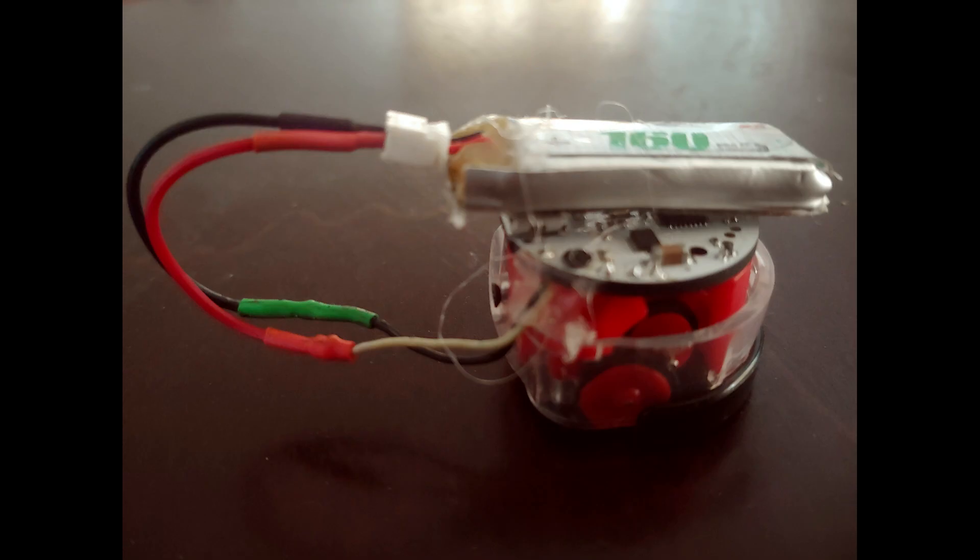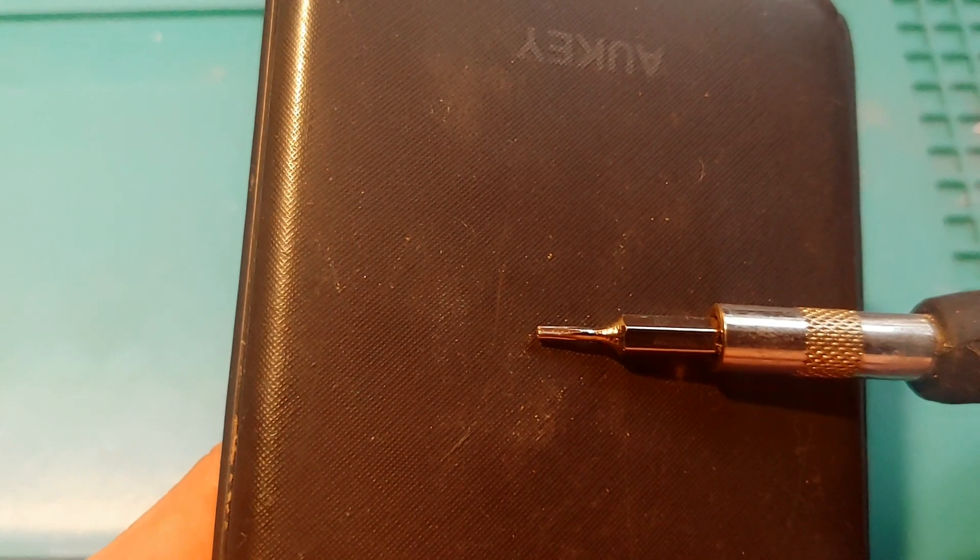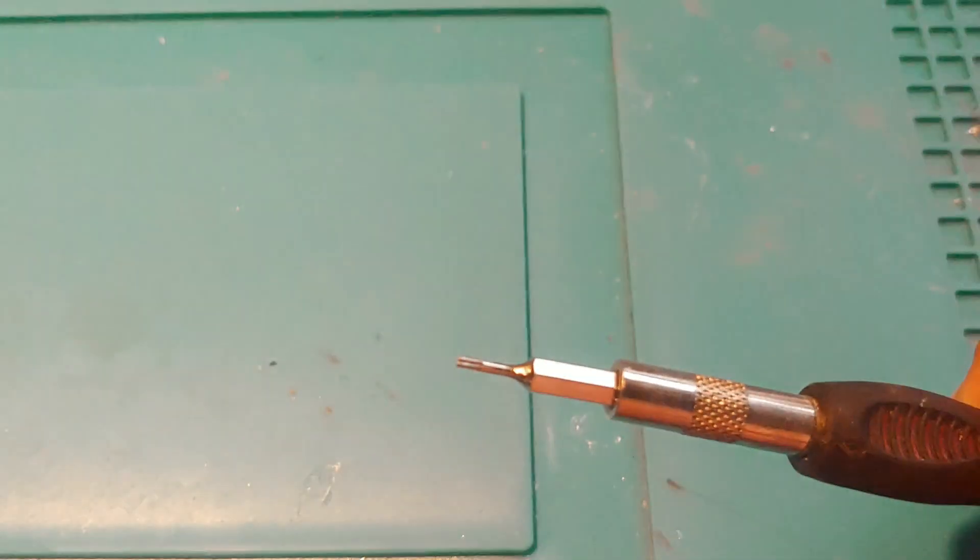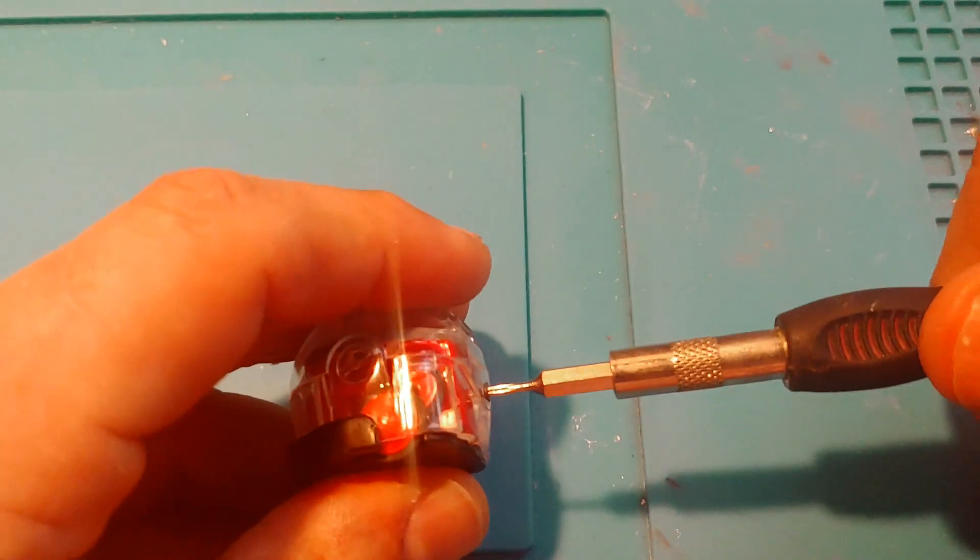So you've got a dead OZOBOT and you need to change the battery, or maybe you just want to take it apart and put it back together again. The first thing you'll see that you need is a small Torx bit. I'm not sure exactly what type it is, but it comes with pretty much any of those little micro screwdriver sets.